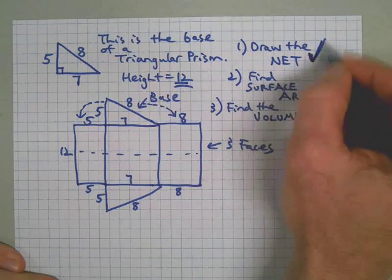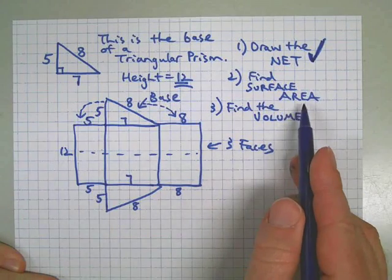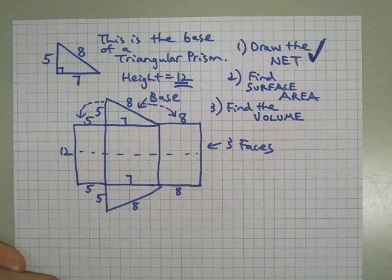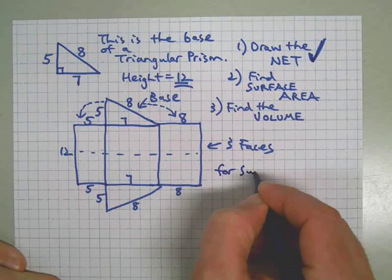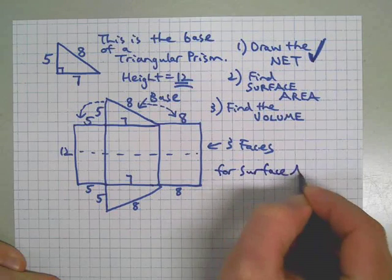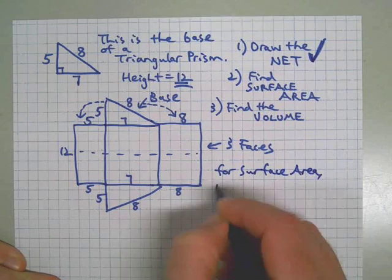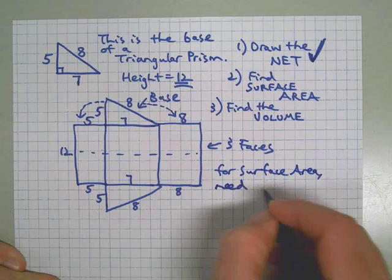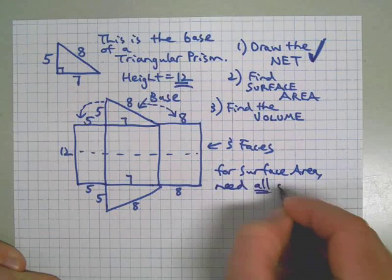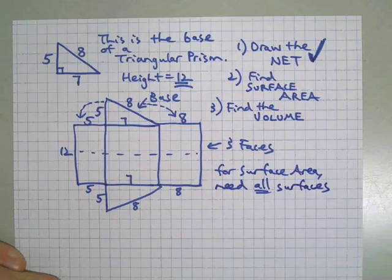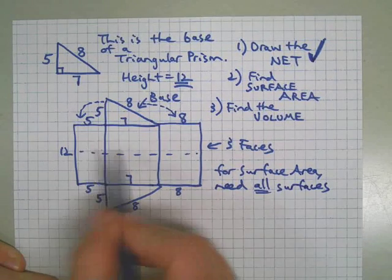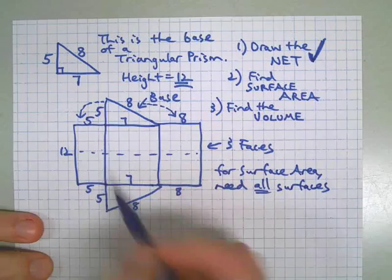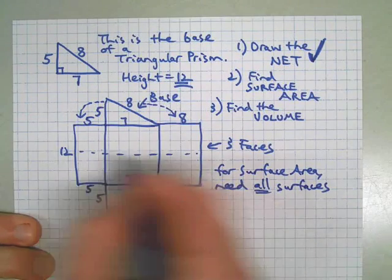Now we're going to find the surface area. To do that, I need the area of all of these surfaces. You need all the surfaces—there are five of them. So one thing we can do is do the work right inside each surface. That way we can better keep track of what's going on here.